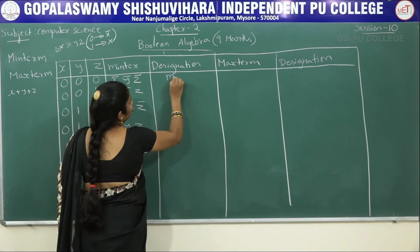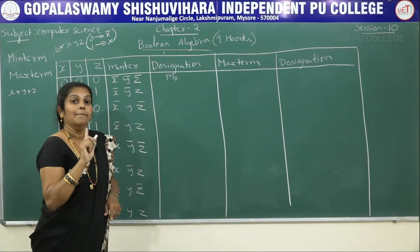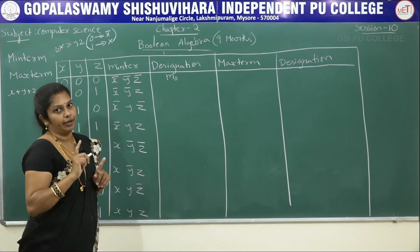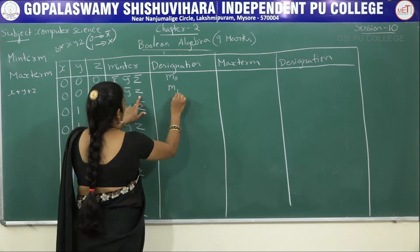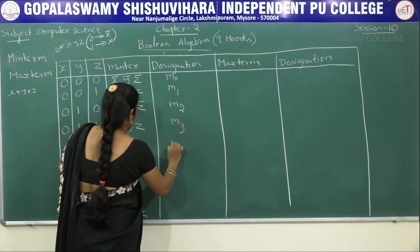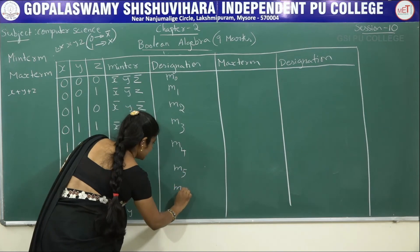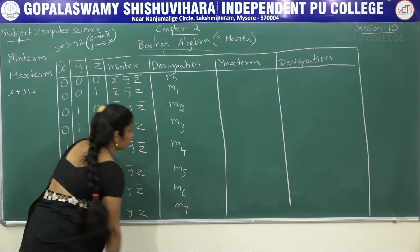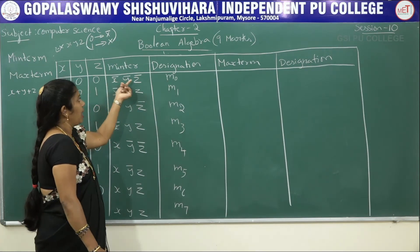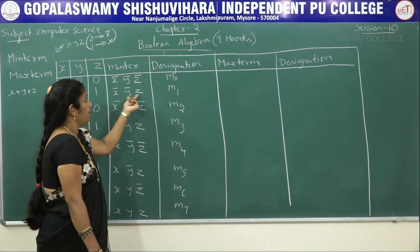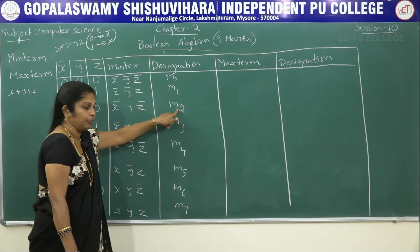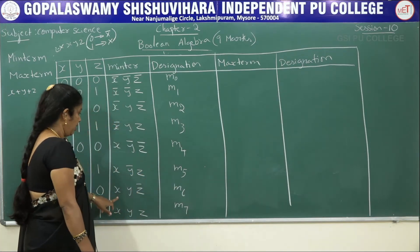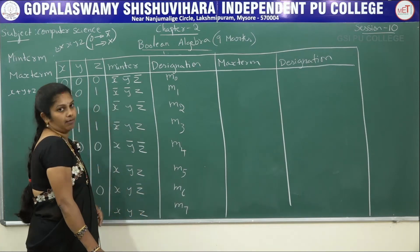The designation for minterms uses a small letter m. Minterms are written with lowercase m; maxterms use uppercase M. The designations are: x̄ȳz̄ is m0, x̄ȳz is m1, x̄yz̄ is m2, x̄yz is m3, xȳz̄ is m4, xȳz is m5, xyz̄ is m6, and xyz is m7.